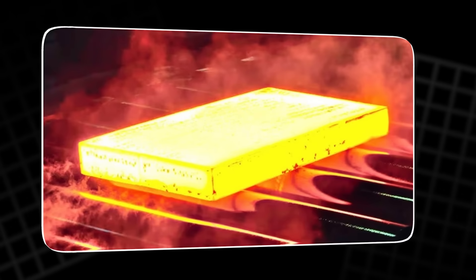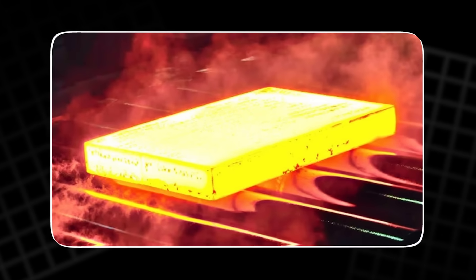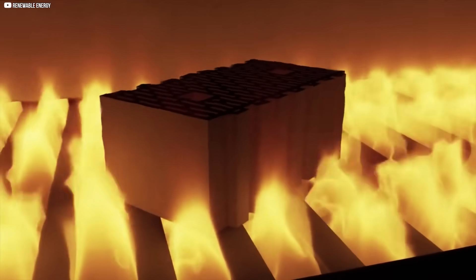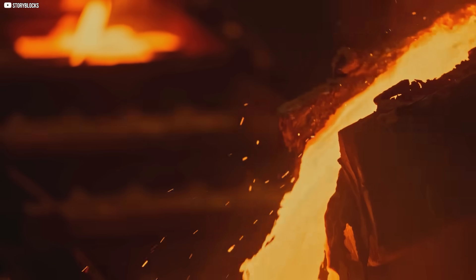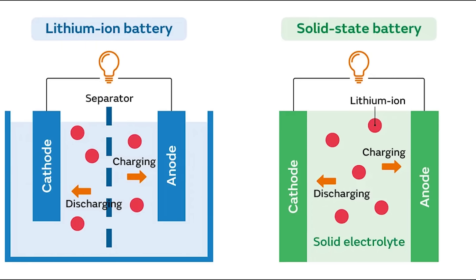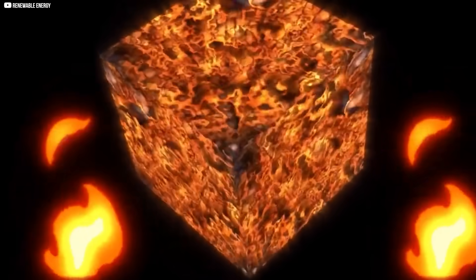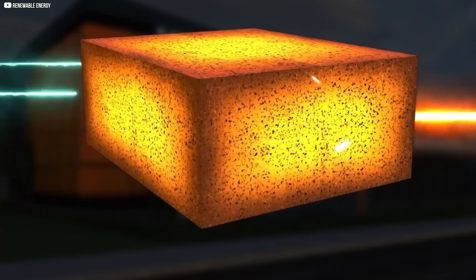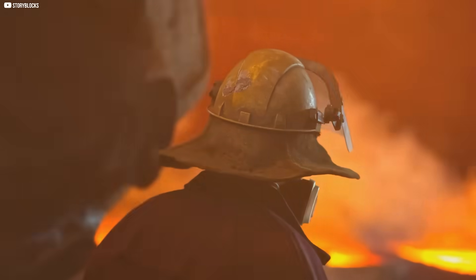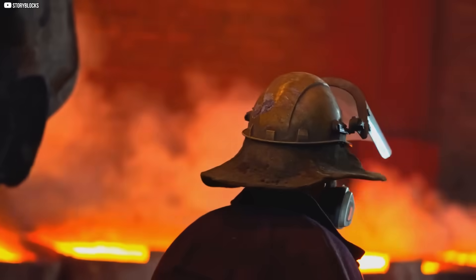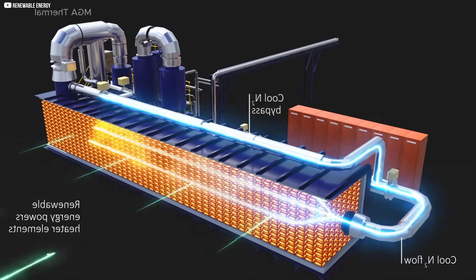When a substance melts, it doesn't get hotter. Not right away. Instead, all the energy goes into the transformation. From solid to liquid. That hidden thermal potential is called latent heat. And it's powerful. By embedding these metals inside a graphite block, the team created something new. A battery that didn't store electricity, but heat.